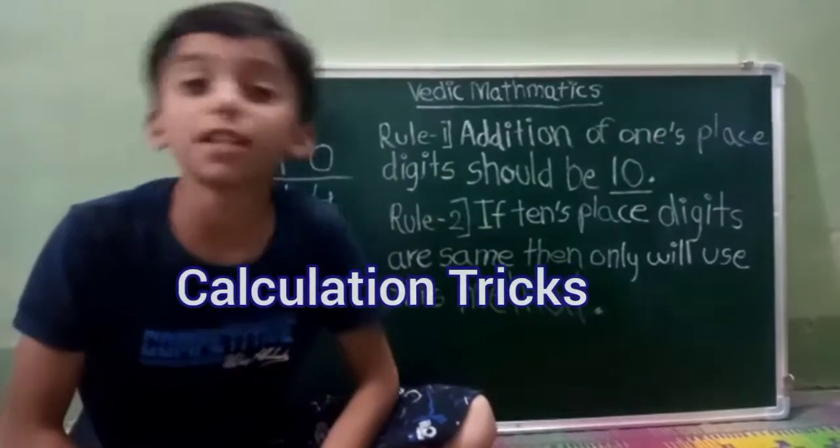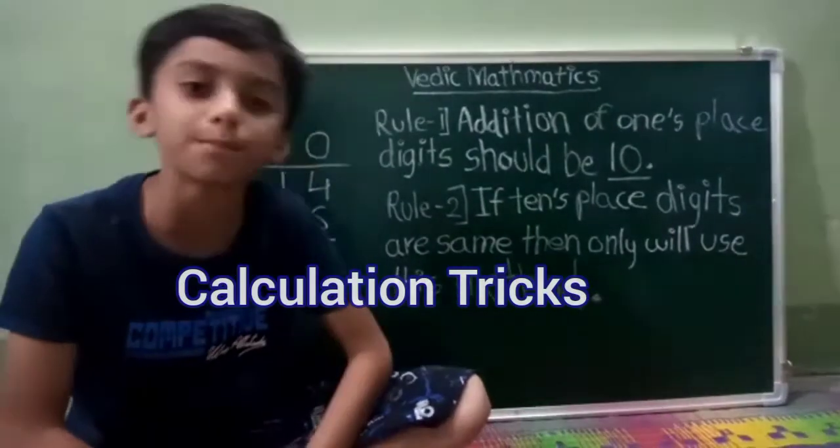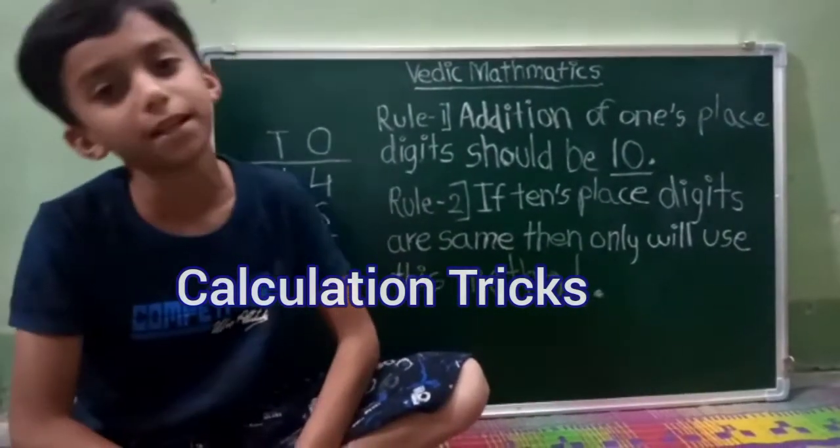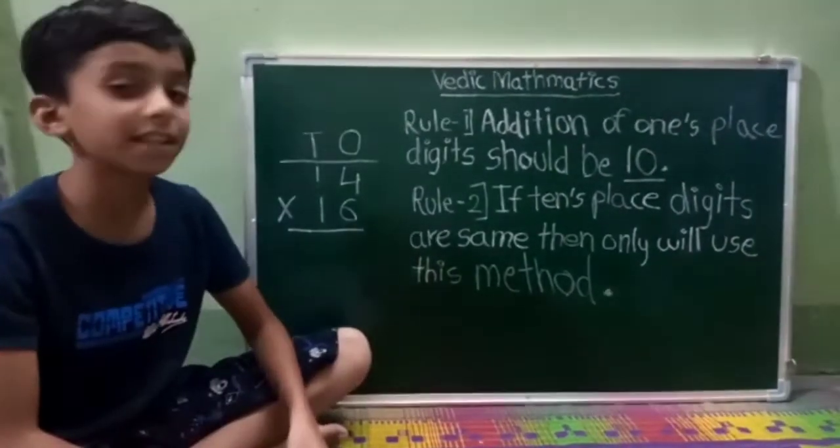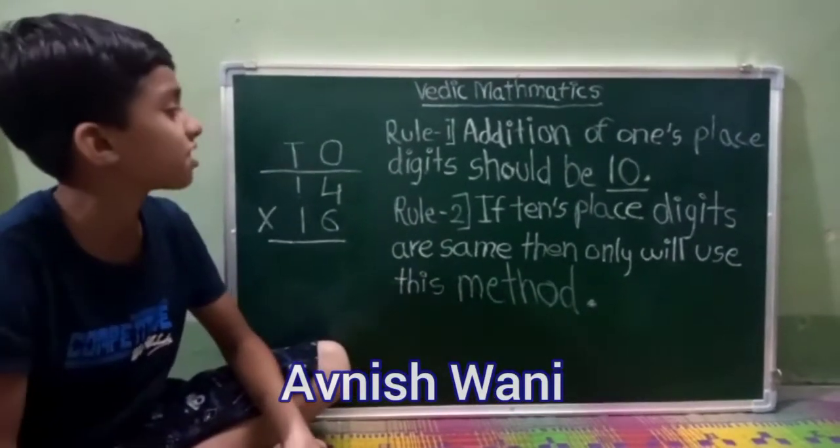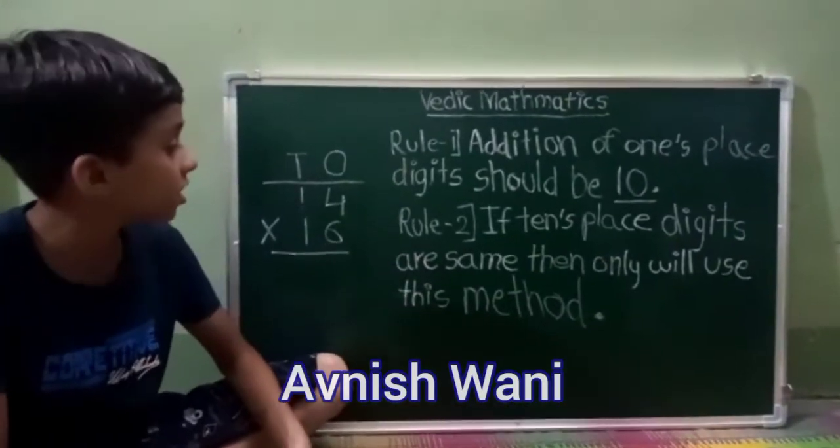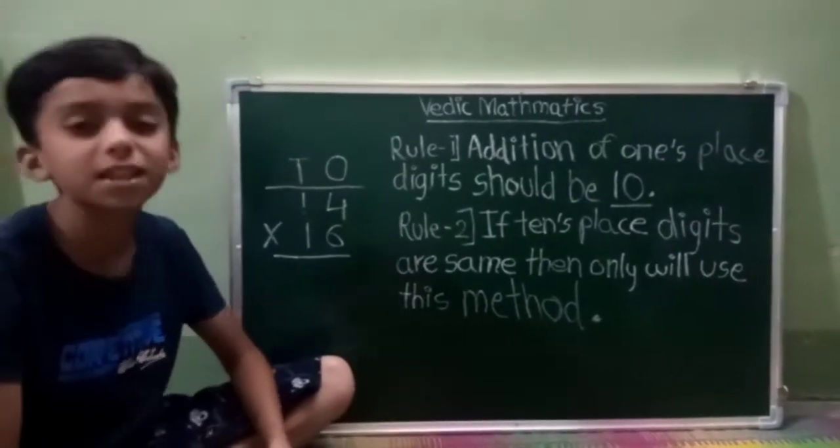Hi everyone, are you facing problem in maths? So let's learn easy way to solving 2 digit multiplication using Vedic mathematics. But it has some rules. Rule 1, addition of 1's place digit should be 10. Rule 2, if 10's place digits are same, then only we will use this method.